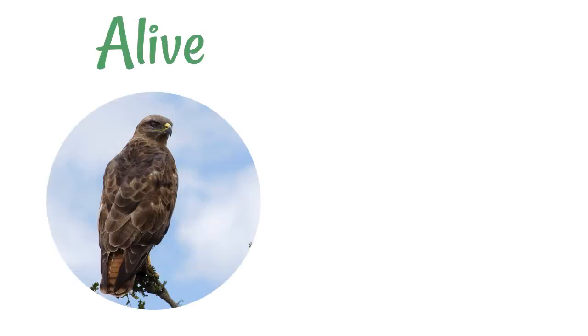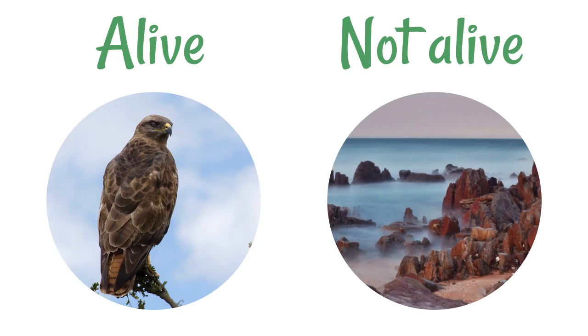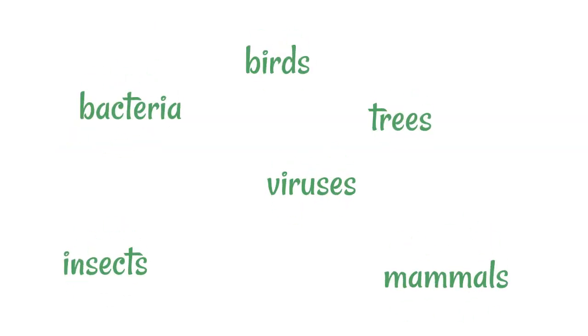It might sometimes seem a little bit silly to try and give characteristics that decide whether something is living or not. Often it's really, really obvious — a bird is alive, rocks are not alive, and you don't need a biology teacher to tell you that. We can look at all the different groups of living things: birds, bacteria, trees, viruses, mammals, and insects. But you might be surprised to realise that viruses are not considered living things, because they are not able to do all the things living things do on their own without help.